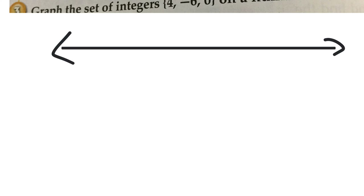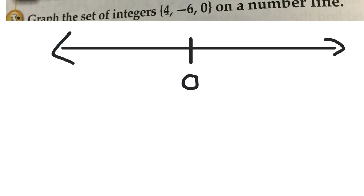The main thing we want to practice is being able to create our number line. In the middle of our number line we always start with 0. Now we work to the right. The biggest number we need to graph is 4, so we go to the right: 1, 2, 3, 4, 5, 6.